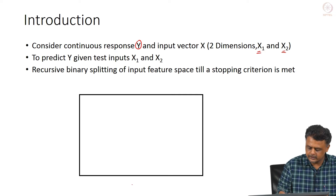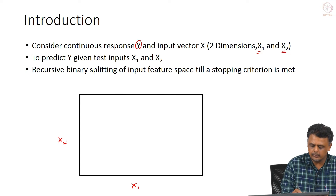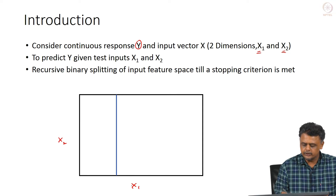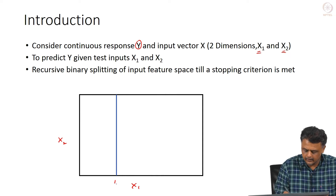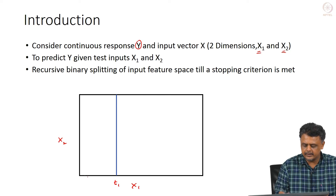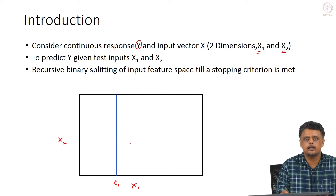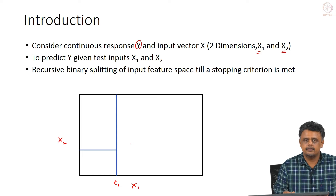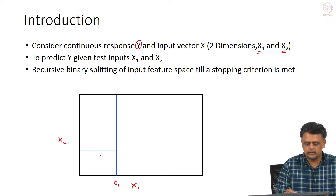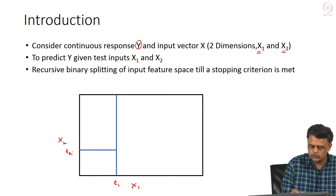We start with the feature space X1 and X2 — two dimensions. We recursively split by choosing a threshold along X1, which we will call T1. Once we choose T1, the input feature space is divided into two regions: one to the left of the blue line and one to the right. We can do a further split by taking the region on the left and choosing a threshold along X2, calling that T2.